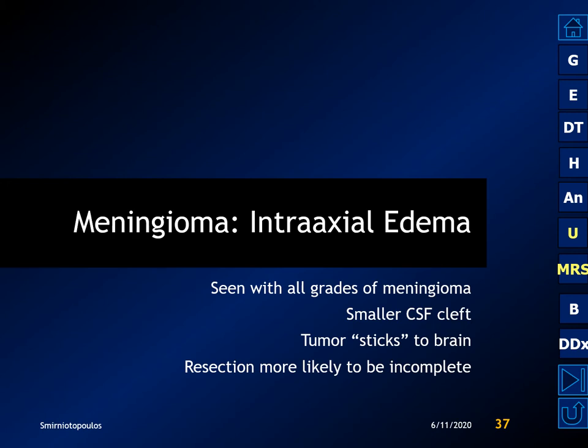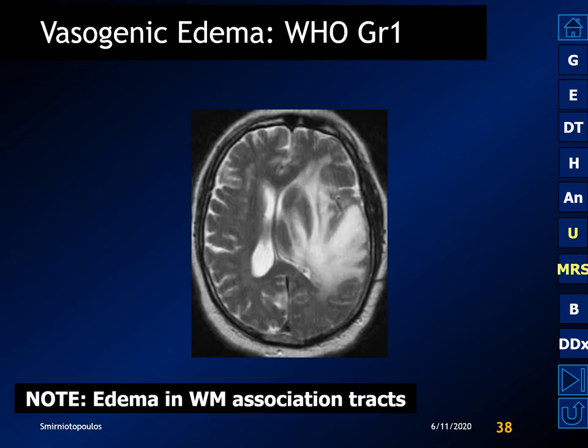Meningiomas often have intraaxial vasogenic edema. This can be confusing because it may misdirect you into thinking you have an intraaxial lesion. Intraaxial edema is seen with all grades of meningioma. It's associated with a smaller CSF cleft and also with microscopic invasion or stickiness of the tumor to the brain. In these cases, resection is often less complete, allowing for tumor recurrence. Here's an example of a WHO grade 1 meningioma with very extensive intraaxial vasogenic edema.